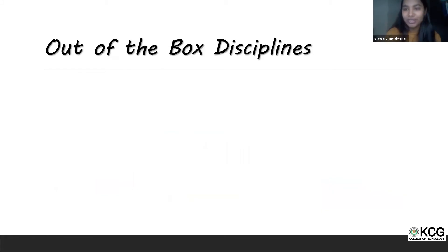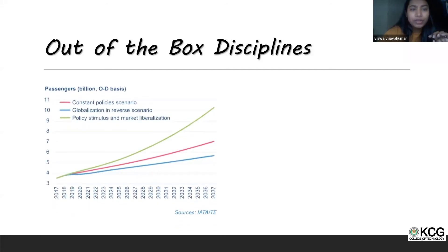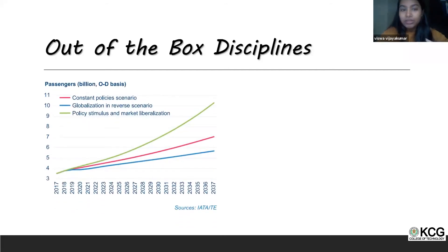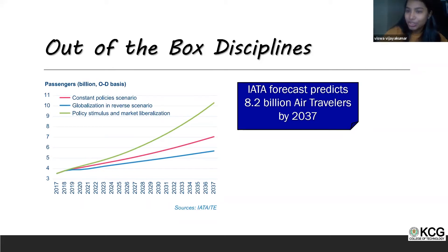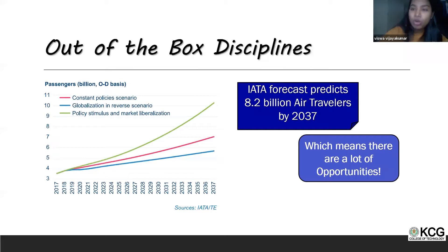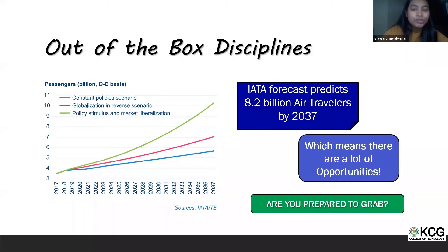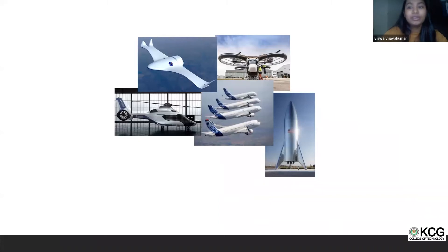Now for today's main topic: out-of-the-box and emerging disciplines in aerospace. IATA forecasts that air travelers will increase to 8.2 billion by 2037. This means enormous opportunities for all of us — but we need to be prepared to grab them. Let's look at the different disciplines where you can build your interests.